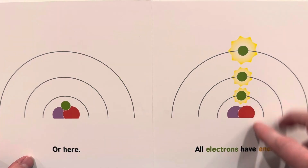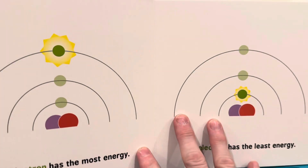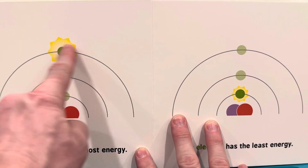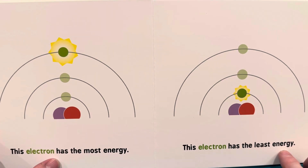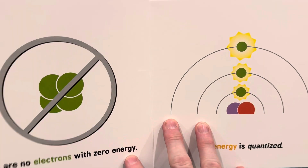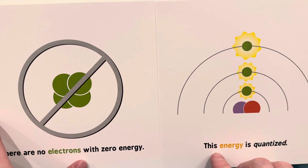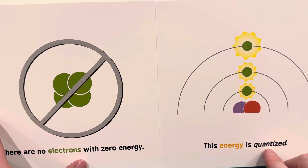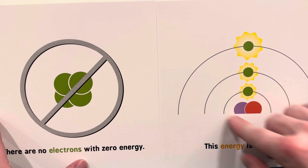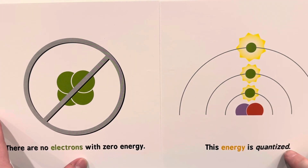All electrons have energy. This electron has the most energy. This electron has the least energy. There are no electrons with zero energy. This electron is quantized.